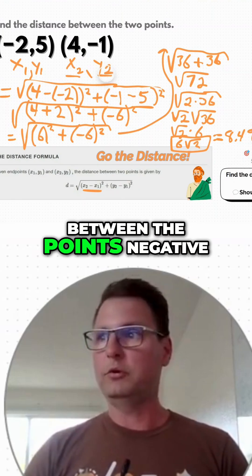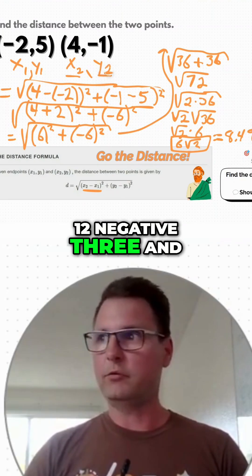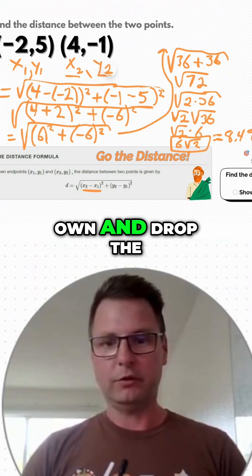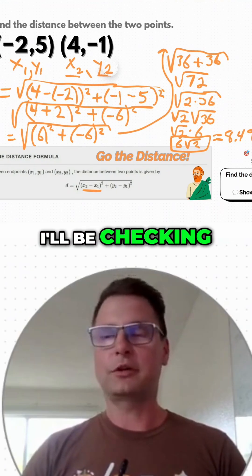So what's the distance between the points negative 12, negative 3, and negative 1, 5? Try it on your own and drop the answer in the comments. I'll be checking.